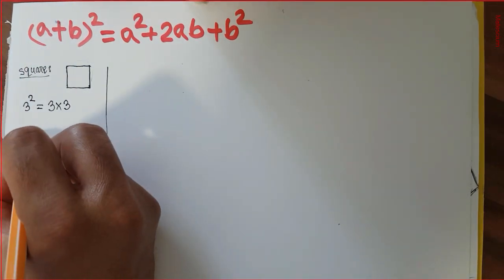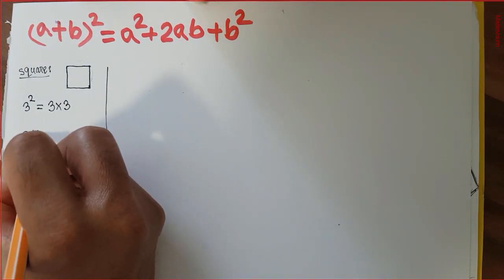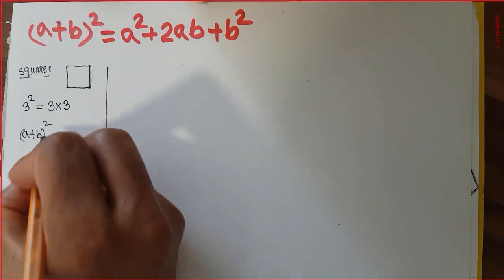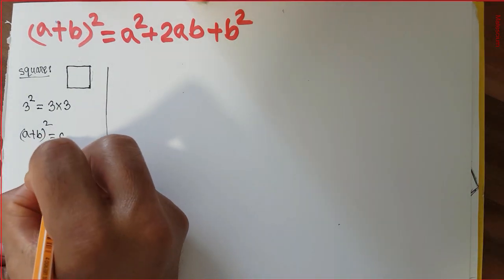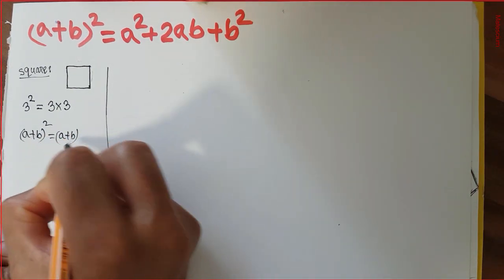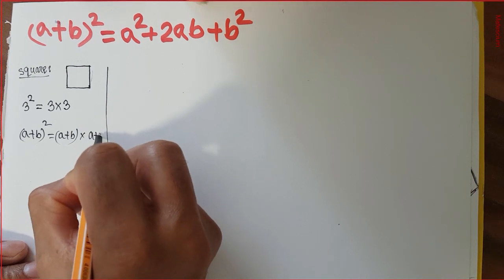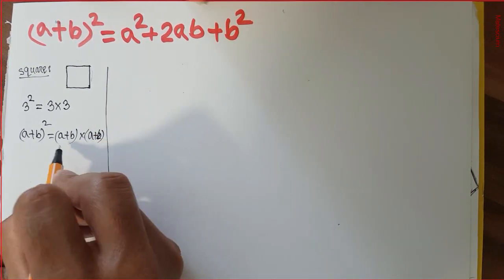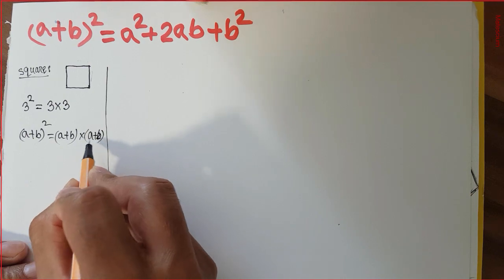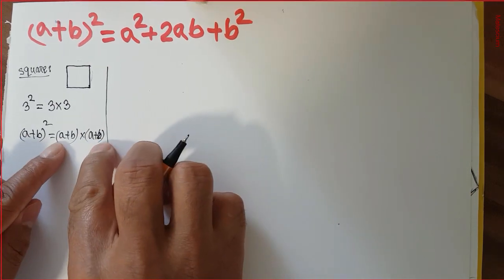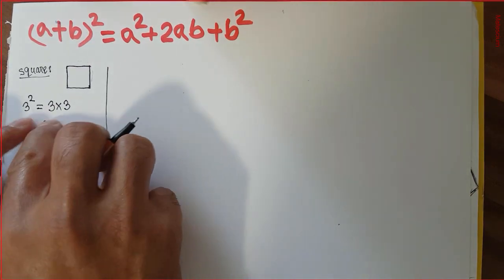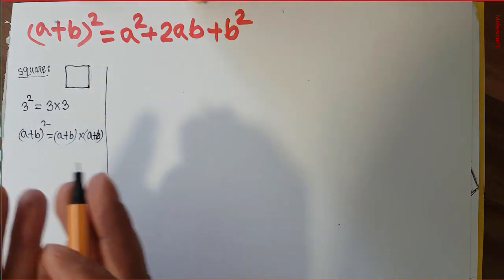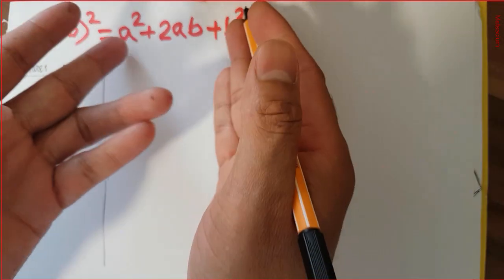Now let me tell you what is the physical meaning of (a + b) whole squared. (a + b) whole squared follows the same explanation — it means (a + b) will be multiplied by itself two times, that is (a + b) multiplied by (a + b). This expression is called (a + b) whole squared. But I think it doesn't make sense yet where this formula actually comes from.